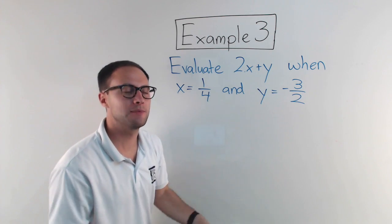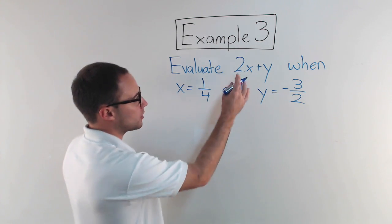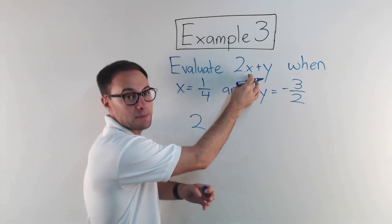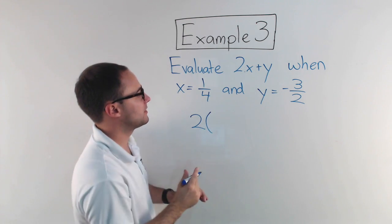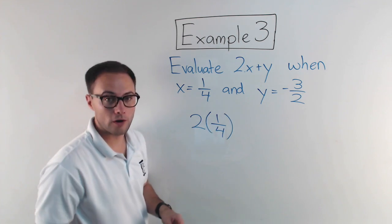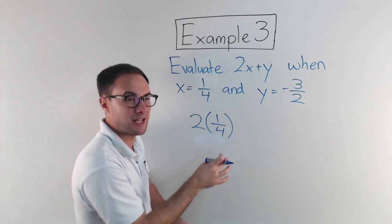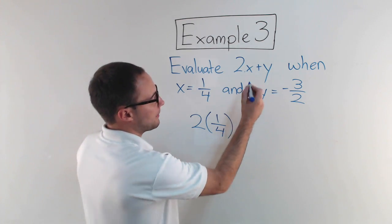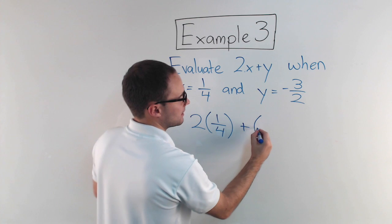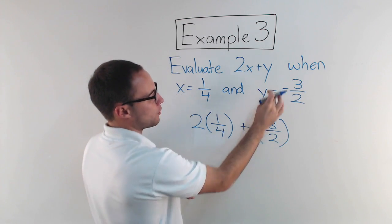So I'm going to substitute one-fourth in for x and negative three-halves for y. Now, when you substitute, you should start to get in the habit of using parentheses. So the two is still there. Two-x means two times x. So I'm going to have my parentheses. That's going to be two times one-fourth. When I substitute, I'm using my parentheses. That's going to help keep things organized. Plus, again, I'm going to use parentheses, negative three-halves. I substitute that in for the y.